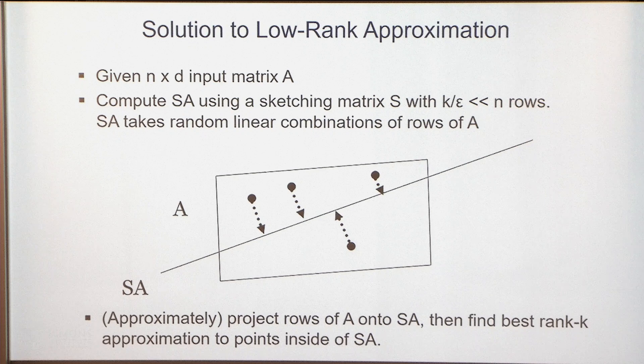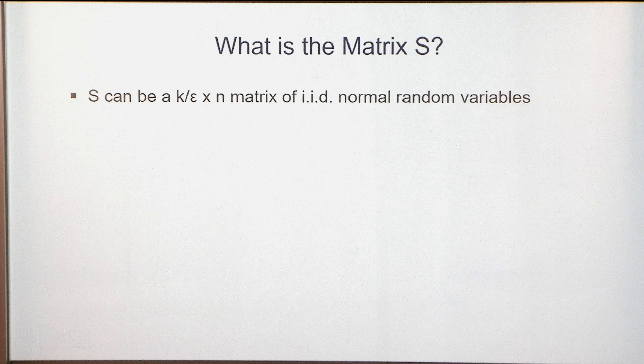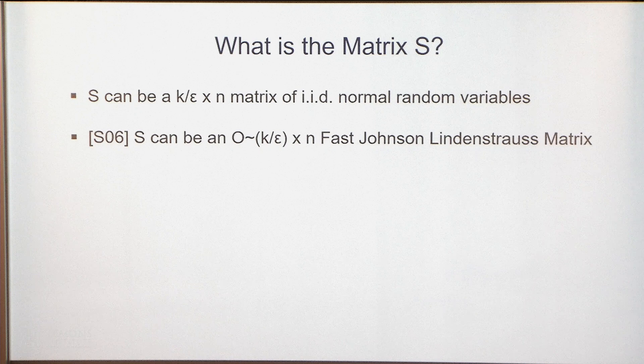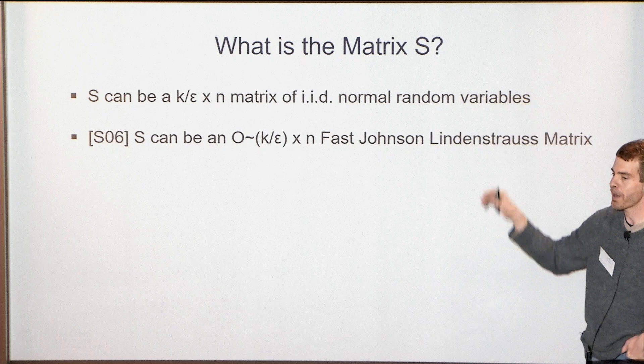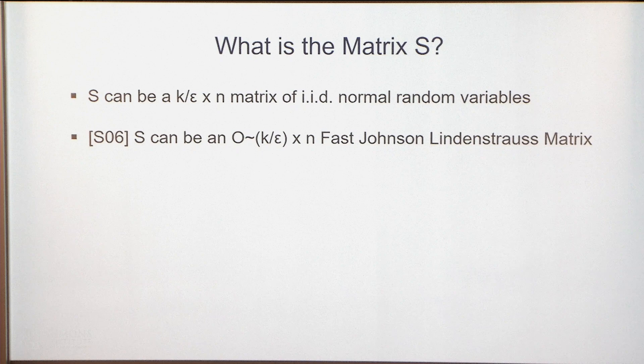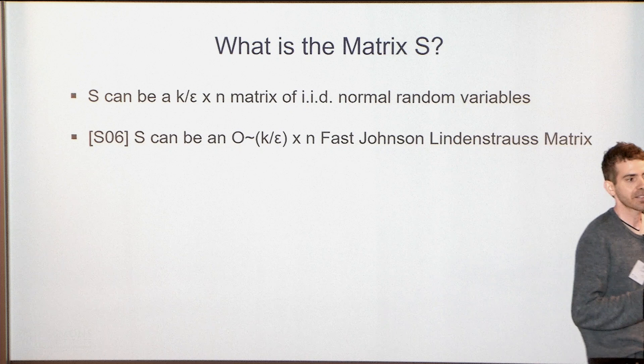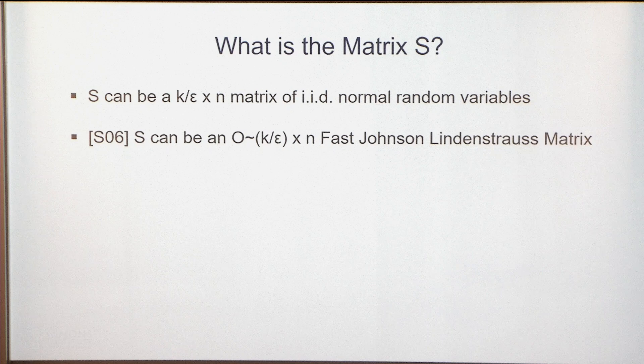A natural question is which random matrix families S to use. A matrix of i.i.d. normal random variables works, but computing S·A is slow because S is dense. Sarlo showed that if instead you choose matrices from a more structured family called Fast Johnson-Lindenstrauss transforms, you still have roughly K/ε rows, and S·A can be applied in roughly N·D time — linear in the product of input matrix dimensions.